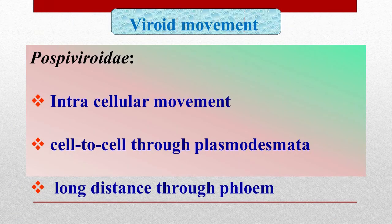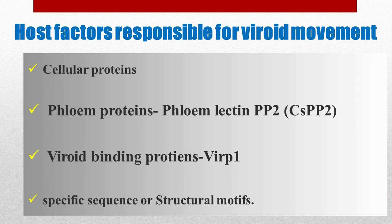Now let's talk about viroid movement. In the case of Pospviroidae, they show intracellular movement, sometimes cell-to-cell movement through plasmodesmata, and long-distance movement through phloem. Host factors responsible for viroid movement include cellular proteins, phloem proteins, viroid binding proteins, and structural motifs.